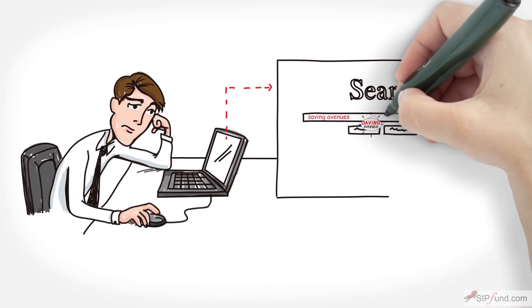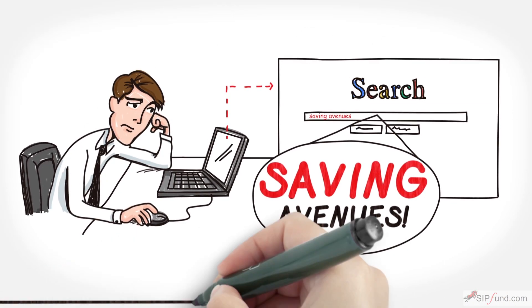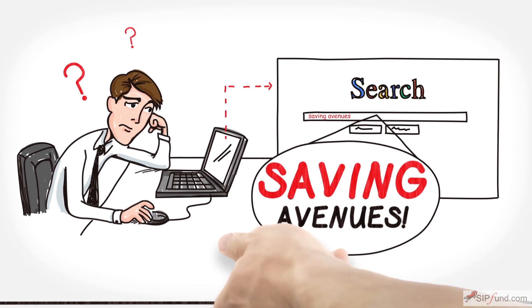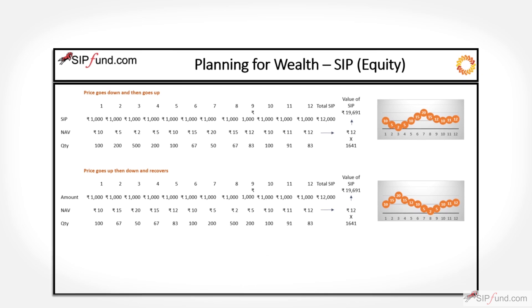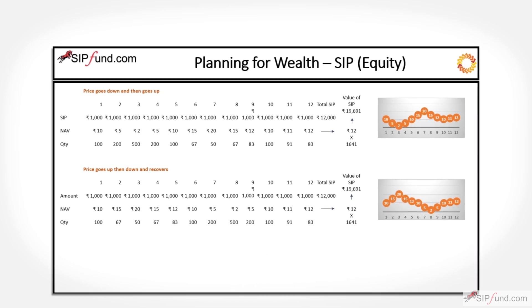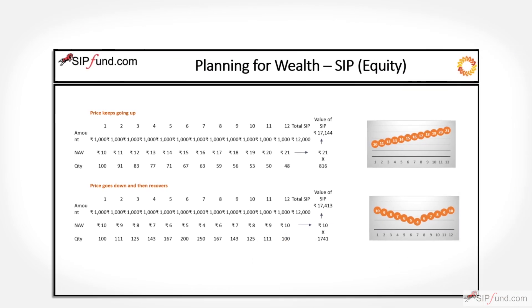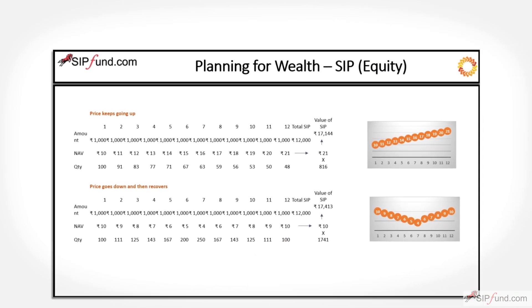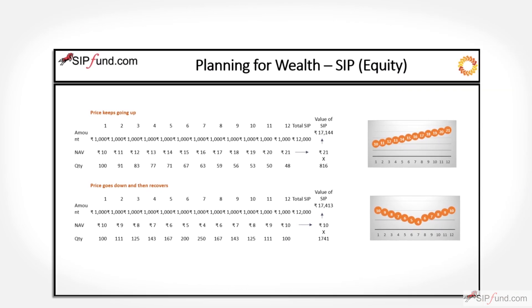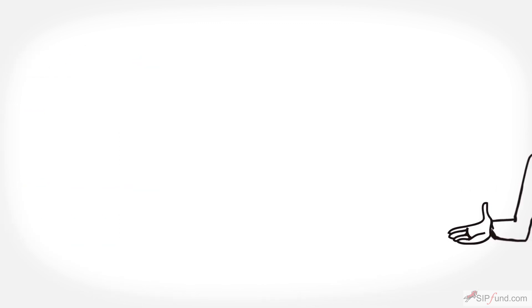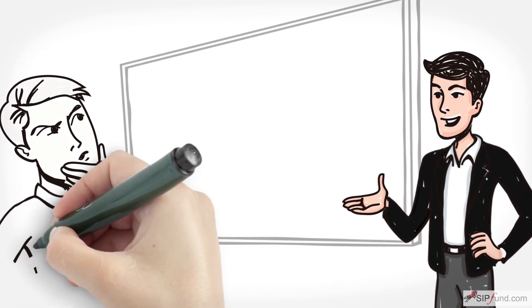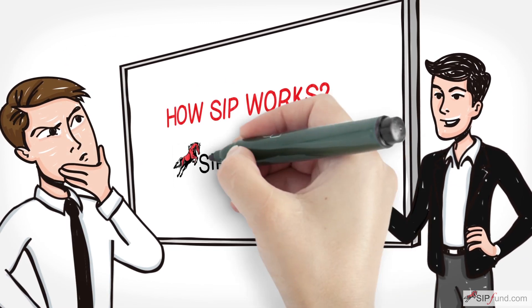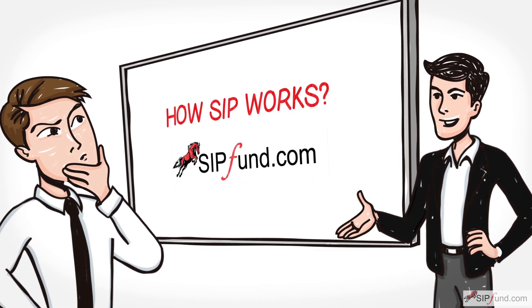Rahul is searching the web for saving avenues. He stumbles upon a Systematic Investment Plan, but he's not really sure about it. A financial advisor explains to him how SIP works.